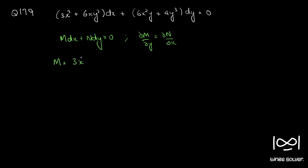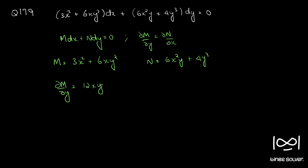Here M = 3x² + 6xy² and N = 6x²y + 4y³. So ∂M/∂y = 12xy and ∂N/∂x = 12xy. Therefore ∂M/∂y = ∂N/∂x, and the differential equation is exact.